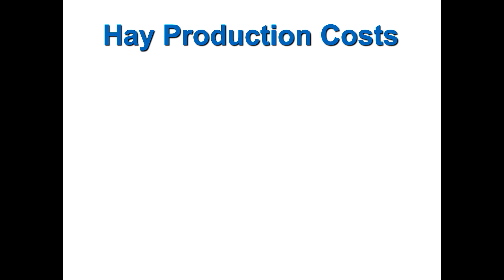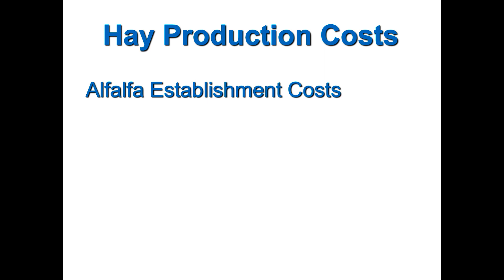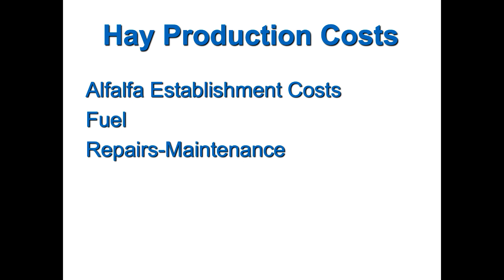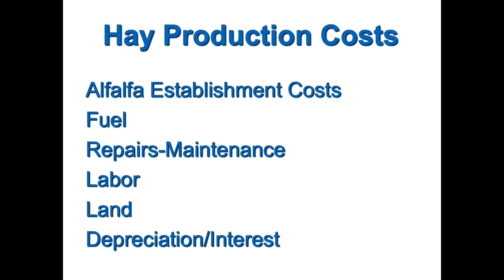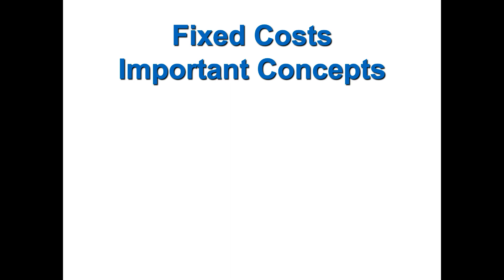For alfalfa hay production, your biggest costs include: establishment costs — seed, fertilizer, drilling, herbicide — and then for making and cutting, there's fuel, repairs, maintenance on equipment, labor, land, and at the bottom, depreciation and interest. That last category is obviously what we're going to focus on for the rest of this presentation.